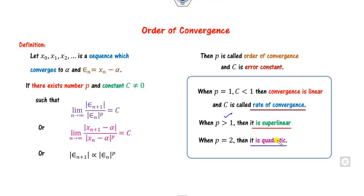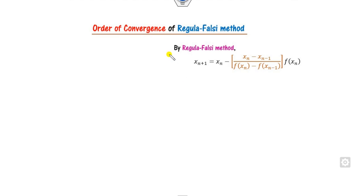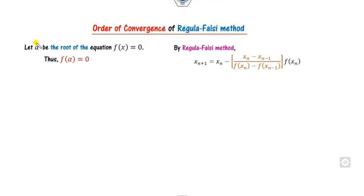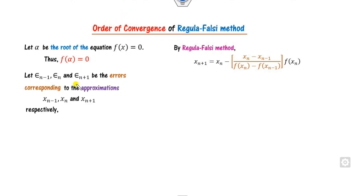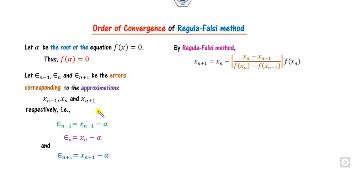Based on this definition of order of convergence, we need to evaluate this expression. We start with the Regula Falsi method. Let f(x) = 0 be any equation; our target is to find its root. Let alpha be the root of f(x) = 0, so f(alpha) = 0. Since we are talking about order of convergence we need the error values. Let epsilon_{n-1}, epsilon_n, and epsilon_{n+1} be the errors corresponding to approximations x_{n-1}, x_n, and x_{n+1}.